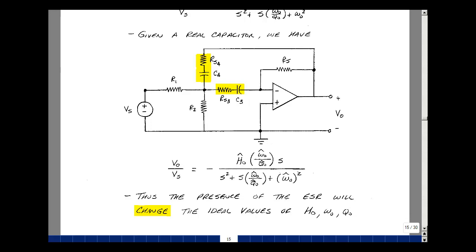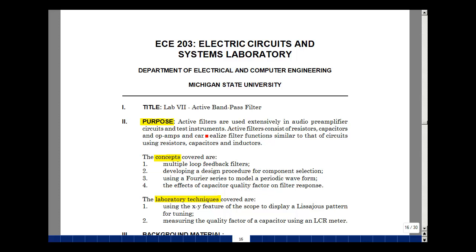The purpose of this lab was to take a look at active filters. These are used extensively in audio preamplifier circuits, as well as test instruments. Active filters consist of resistors, capacitors, and some form of amplification. In our case, we used an op amp. And these can realize filter functions similar to RLC circuits. What we'll see in chapter 15 of ECE 202 is that inductors have another effect called mutual inductance, and this can electrically couple one inductor to another, and this can cause problems in certain types of filter circuits. The concepts we covered in the lab lecture: multiple loop feedback filters, we developed a design procedure for component selection, talked about using a Fourier series to model a periodic waveform, and lastly, we looked at the effects of capacitor quality factor on filter response. In the laboratory, we'll take a look at using the XY feature of the scope to display a Lissajou pattern for tuning. We'll also measure the quality factor of a capacitor using an LCR meter.